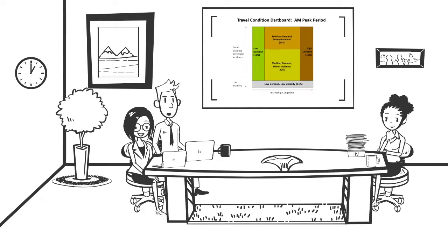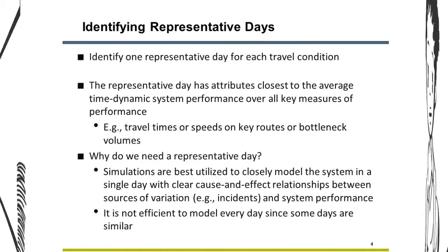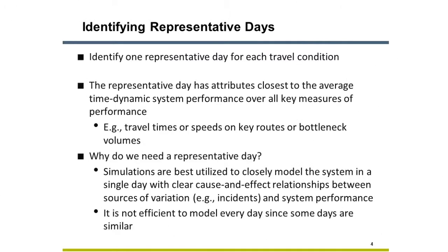If you give the OK, I will start calibrating targets for a simulation model for each cluster. You have my approval. Please get started right away. How does calibration work under the new guidance? Calibration targets are built around representative days drawn from each cluster. The targets are based on the time dynamic patterns of each key measure, called variation envelopes.